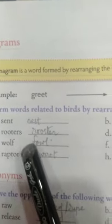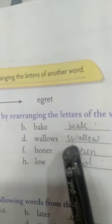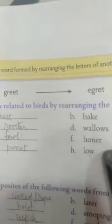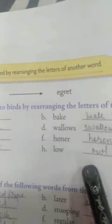Rooters — rooster; wallows — swallow; wolf — fowl; honor — heron; raptor — parrot; low — owl.